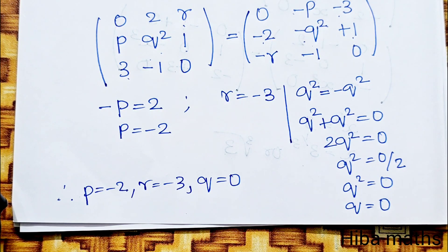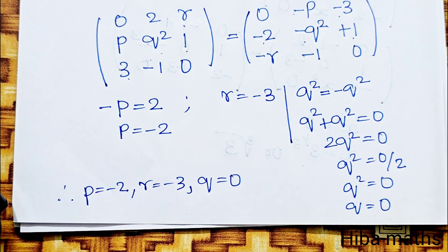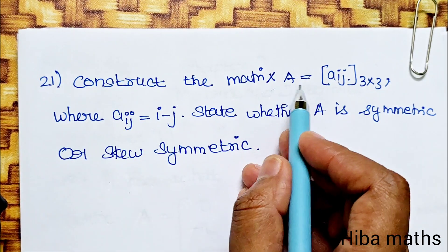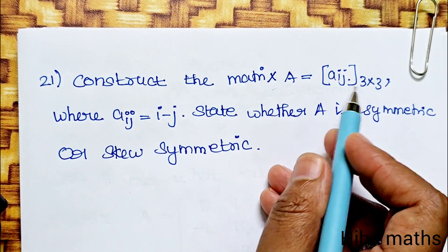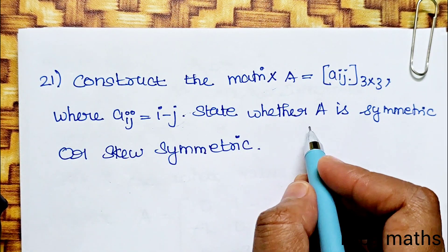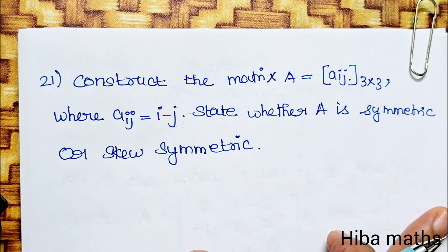Same method: B transpose equals minus B, just as A transpose equals minus A. Now, question 21: Construct the matrix A = [a_ij] of order 3×3 where a_ij = i minus j. State whether A is symmetric or skew-symmetric.